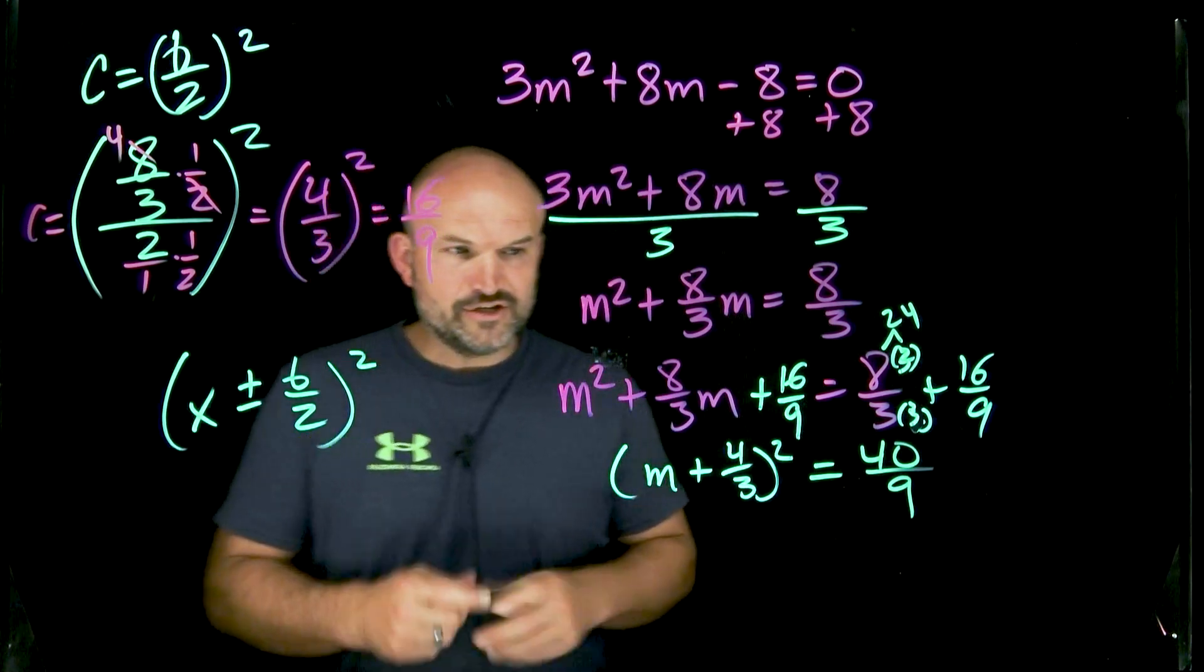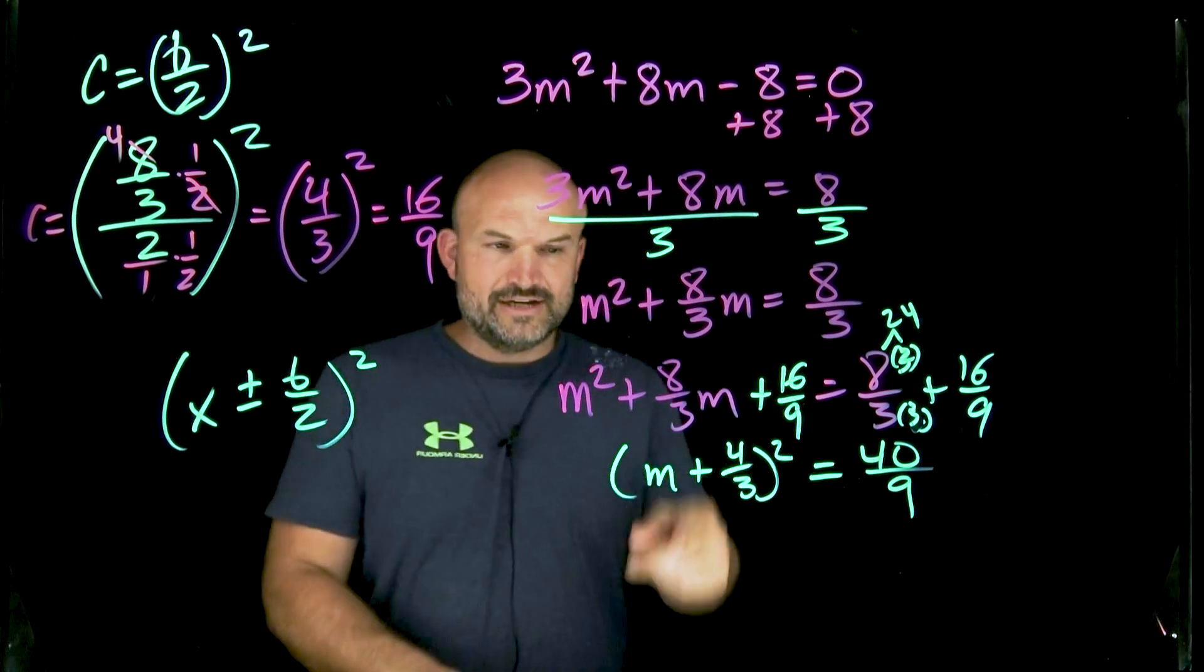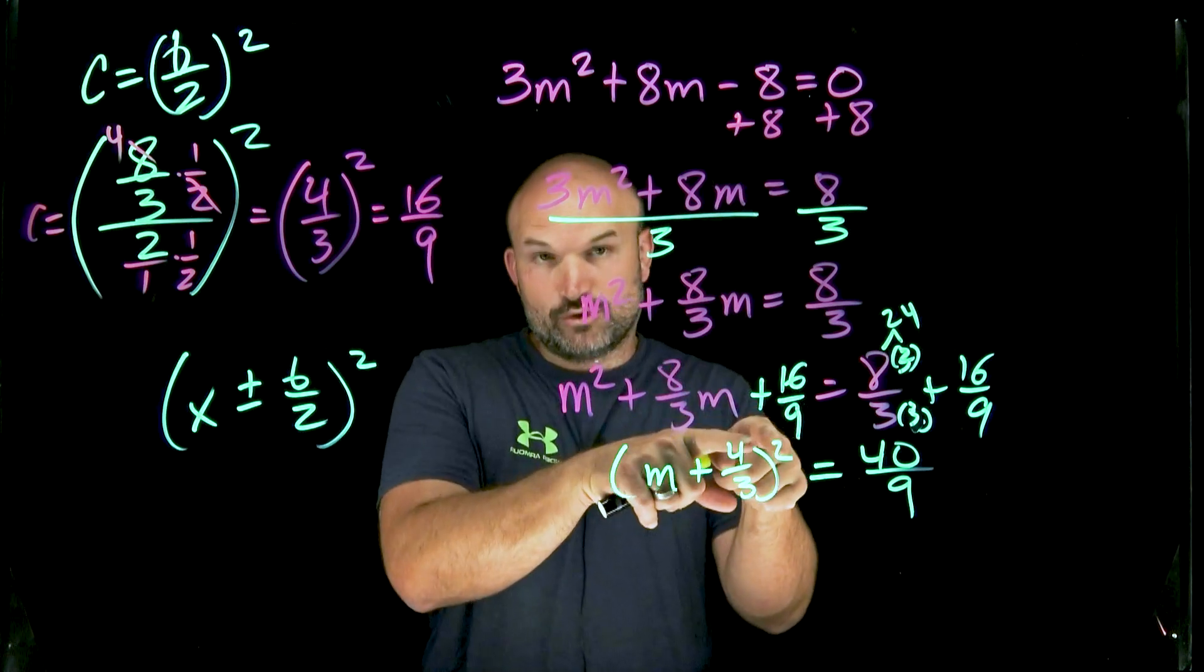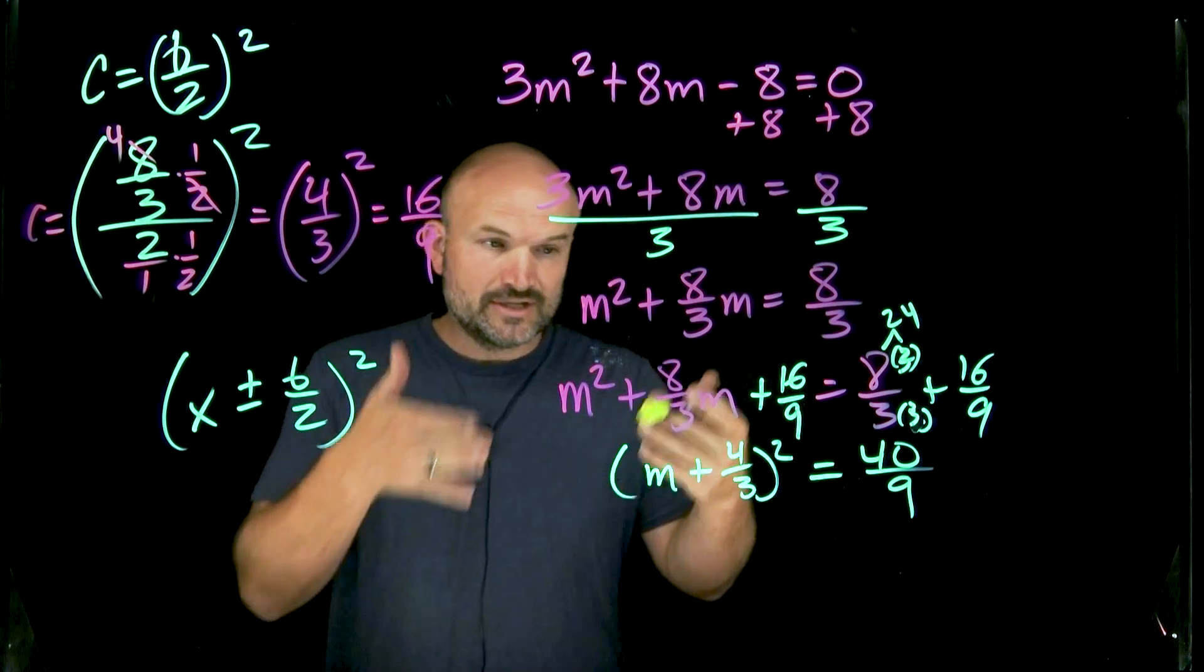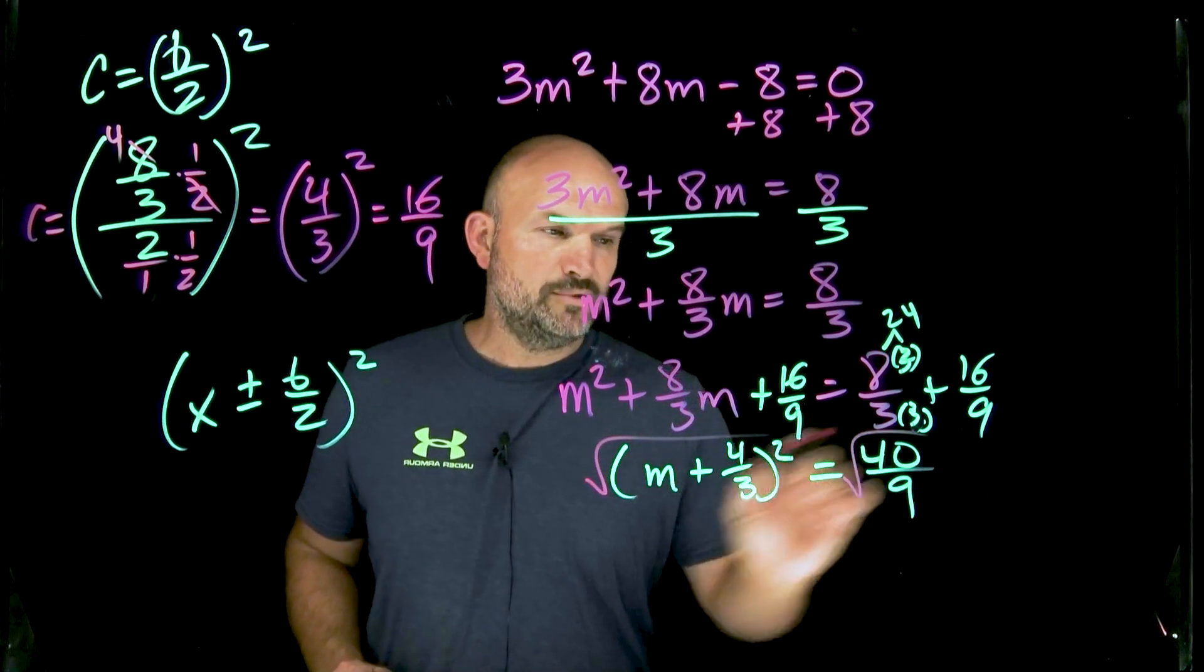So now, all I simply need to do, and again, the purpose and the point of doing this is now I only have one term. And you can see I have these operations. I have it squared, and then I'm adding a four-thirds. So to solve for this, all I simply need to do now is take the square root of both sides.